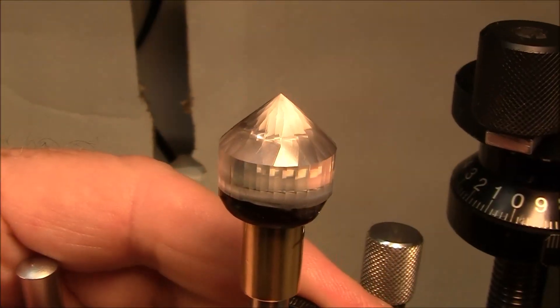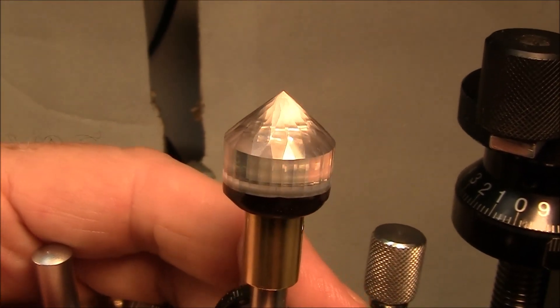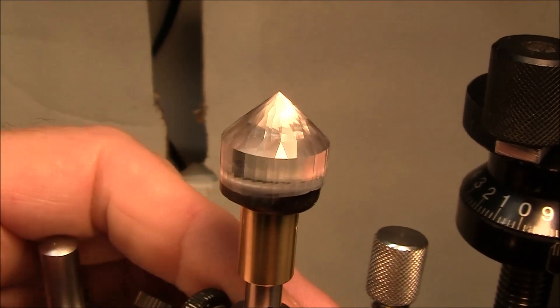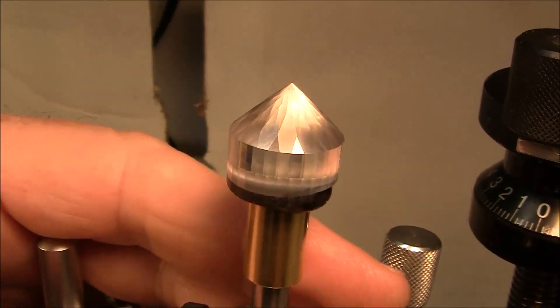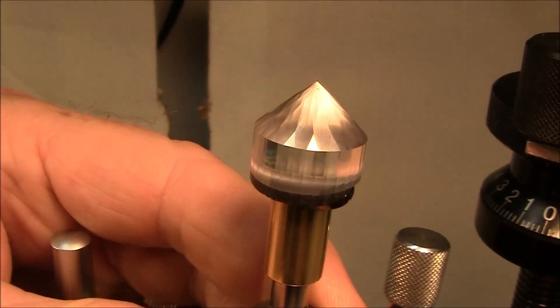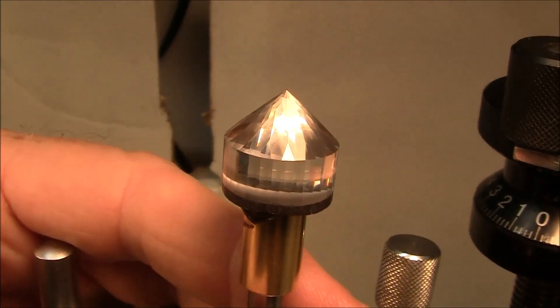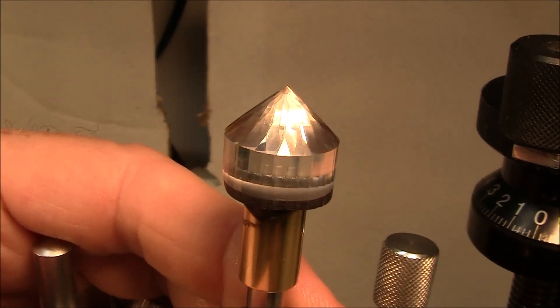I've now cut every facet up to 3000 grit. And I used a pandemonium 3000 paste on a zinc lap. Got a little more touch up to do on the girdle facets.